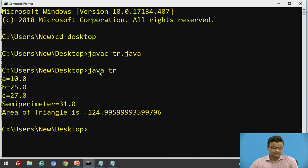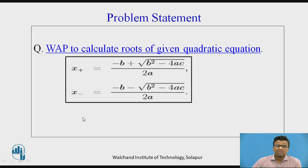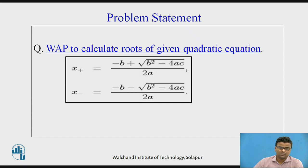Now we move to the second program, which also uses a mathematical function. The problem statement: write a program to calculate the roots of a given quadratic equation. Suppose we have the equation ax² + bx + c = 0. The formula is: x equals minus b plus or minus the square root of (b² minus 4ac), divided by 2a — giving roots x1 and x2.